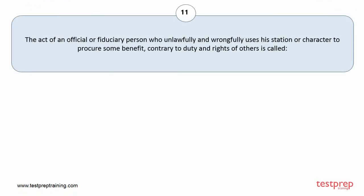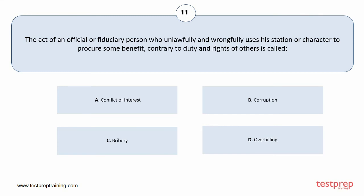Question number 11. The act of an official or fiduciary person who unlawfully and wrongfully uses his station or character to procure some benefit, contrary to duty and rights of others, is called. Your options are A. Conflict of interest, B. Corruption, C. Bribery, D. Overbilling. The correct answer is option B.